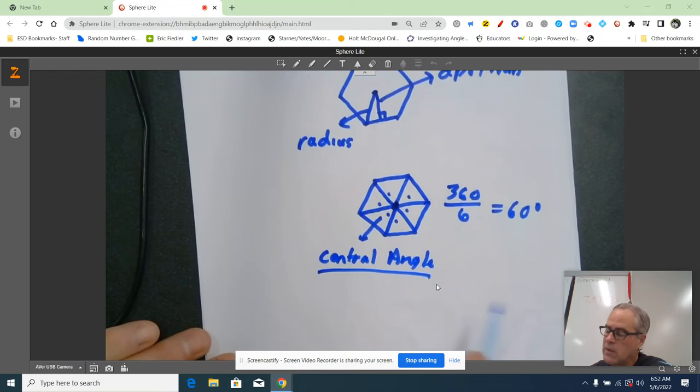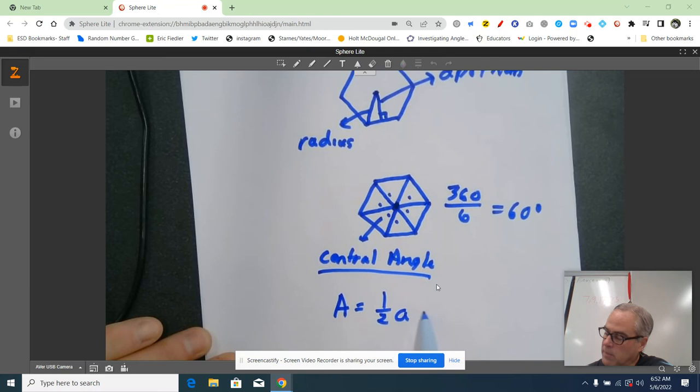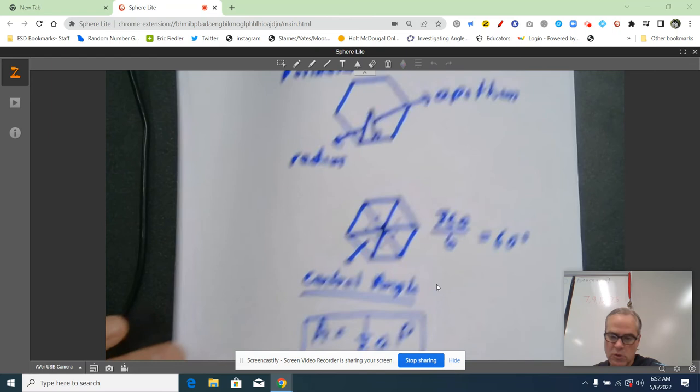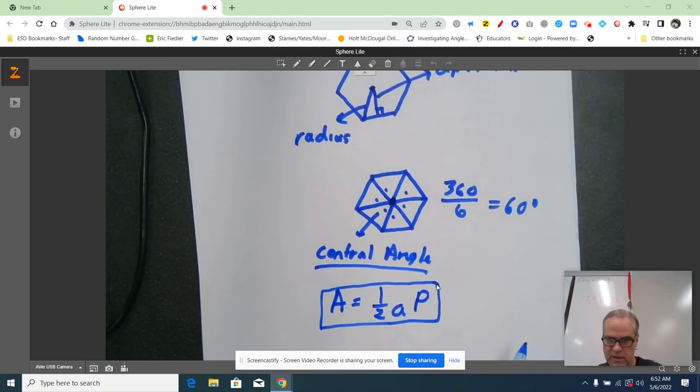The formula is this: area equals one half the apothem times the perimeter. And that's the formula that you need to have in your note sheet. Basically, if you notice, it looks very similar to a triangle formula. What it is, is a shortcut to find the area of all the triangles in a regular polygon that are drawn from its central angle.